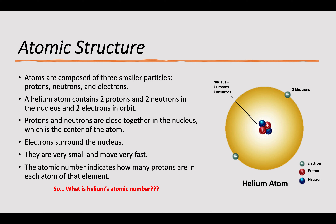Atoms are composed of three smaller particles: protons, neutrons, and electrons. Protons are represented by a plus sign — they're positive. Neutrons are neutral. Electrons are negative. Protons and neutrons are found within the nucleus at the center of an atom, and the electrons are in orbit around that nucleus. This is again a helium atom, which contains two protons represented by the red positive, two neutrons which are blue in this example, and then two electrons in orbit which are the gray negatives.